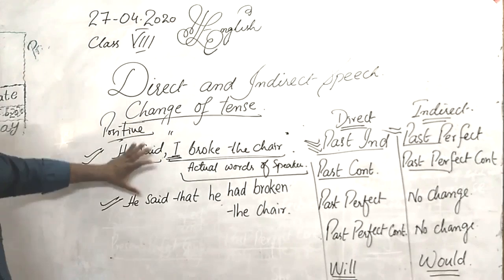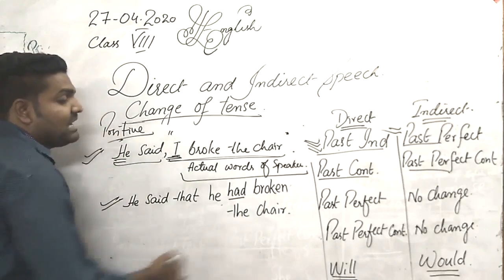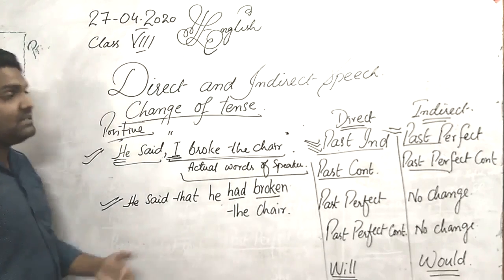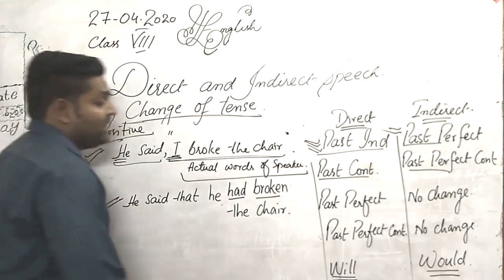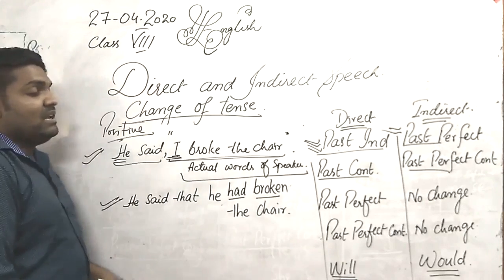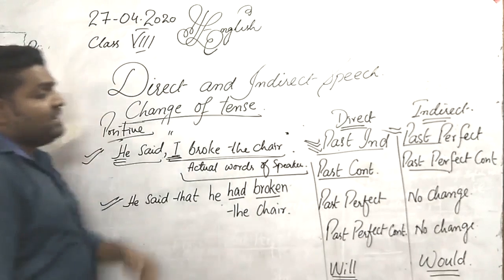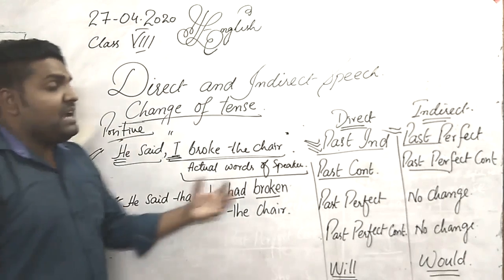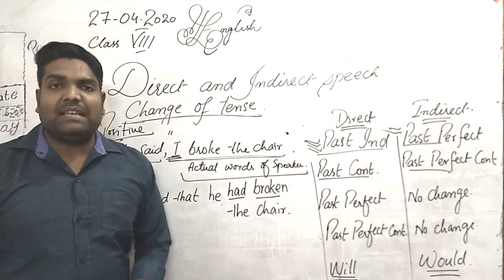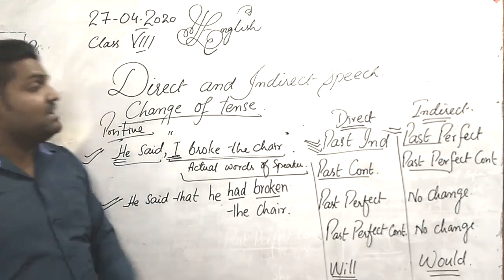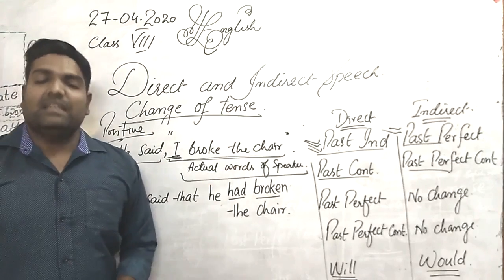As I have told you, the helping verb tells about the tense and the main verb tells about the sentence. For example, 'He has broken' must be changed into 'He had broken', as I have written here. In this way you can learn easily, practice making sentences, and easily learn the change of direct speech into indirect. Thank you very much.